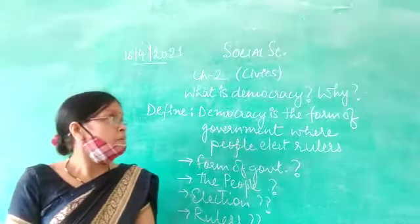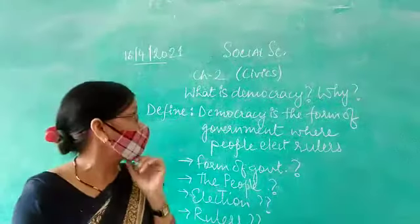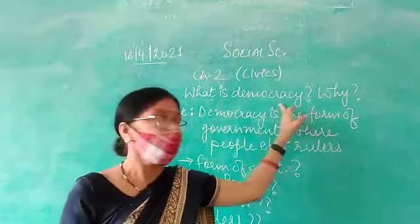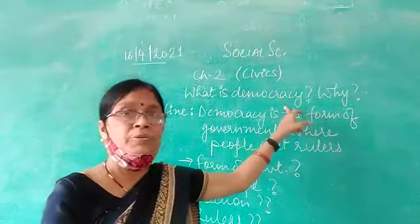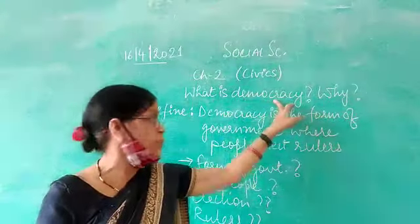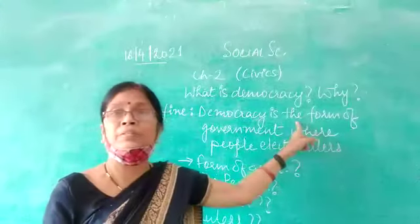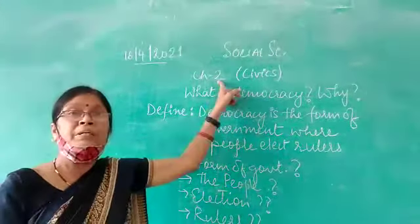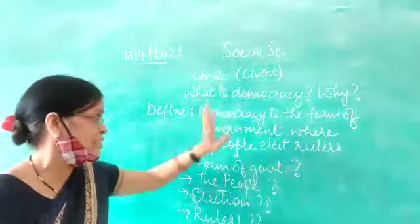Good morning students. Today we are going to start chapter number 2. The name of the chapter is 'What is Democracy and Why.' We all know what democracy is. I have written a very simple definition which is given in your book in chapter 2. It will be easy for you to understand if you just see your book and listen to the video.